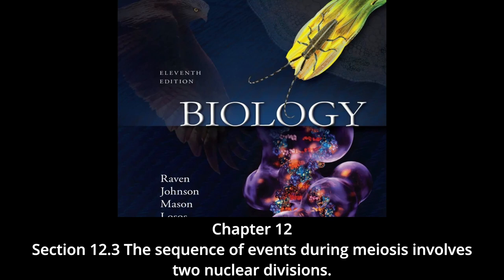Prophase two: at the two poles of the cell, the clusters of chromosomes enter a brief prophase two, with each nuclear envelope breaking down as a new spindle forms. Metaphase two: spindle fibers bind to both sides of the centromeres, then contract, splitting the centromeres and moving the sister chromatids to opposite poles. Telophase two: the nuclear envelope reforms around the four sets of daughter chromosomes. The final result is four cells containing haploid sets of chromosomes — no two are alike because of crossing over in prophase one.